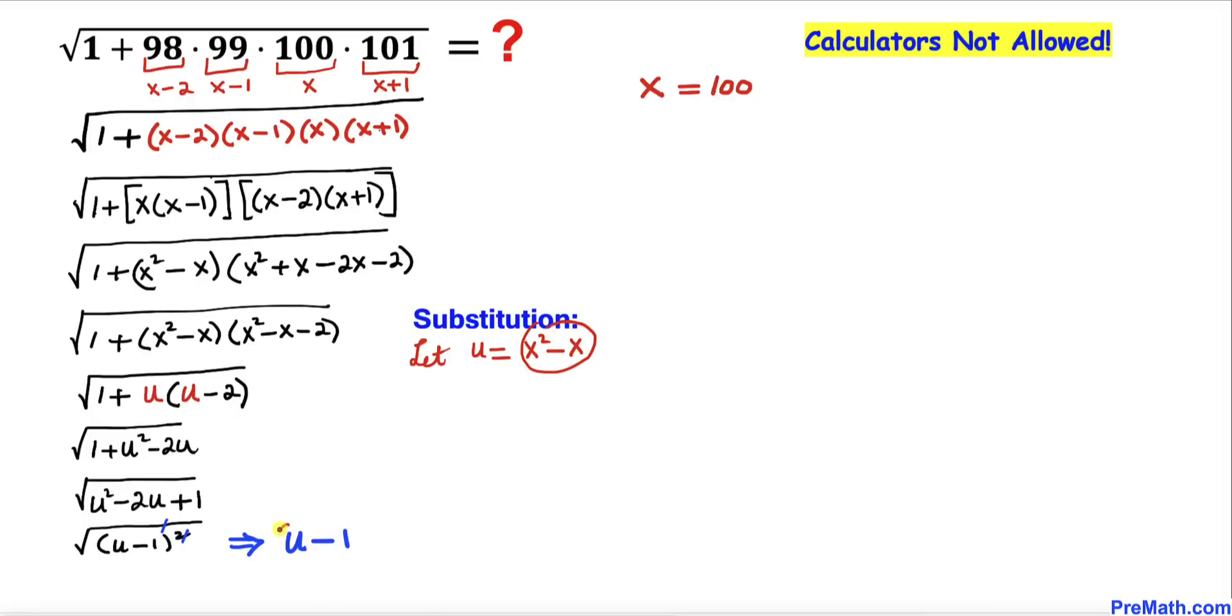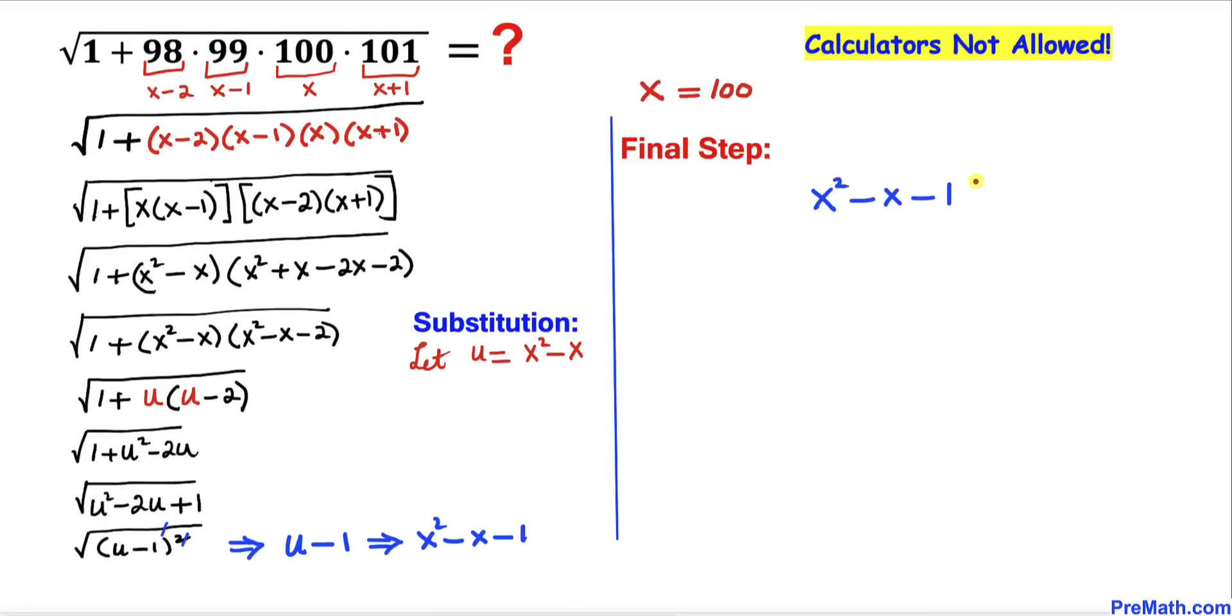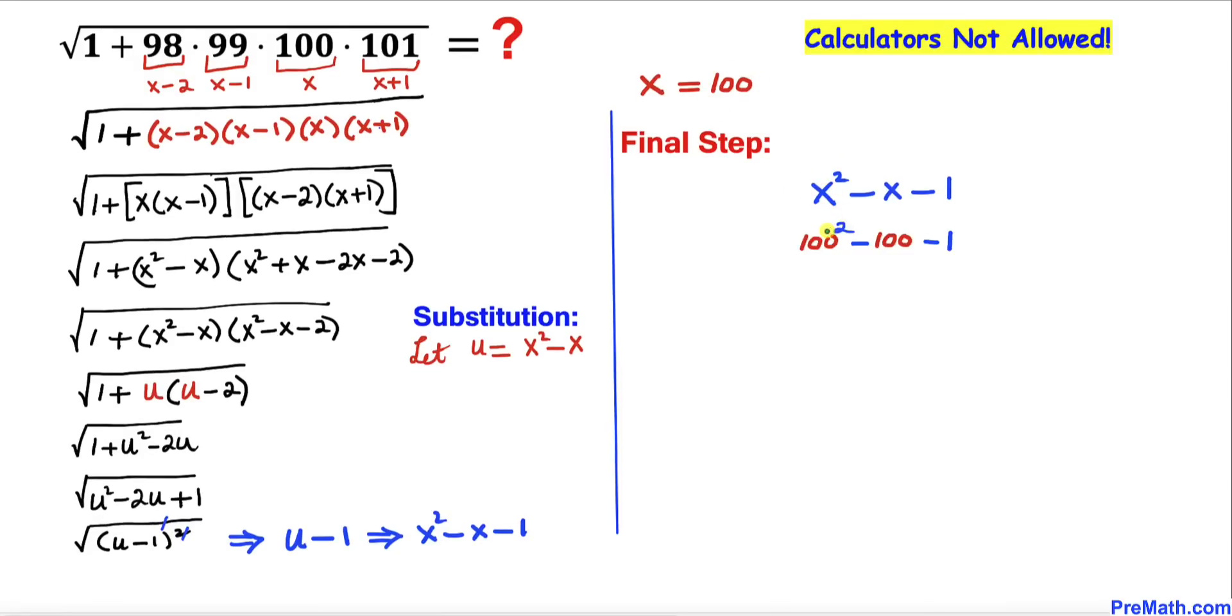But we know our u equals x squared minus x, so I'm going to replace this u by x squared minus x. Therefore this is going to become x squared minus x and then this minus 1 over here. Here's our simplified expression: x squared minus x minus 1. Now we are going to replace x by 100.